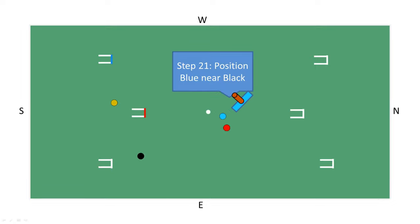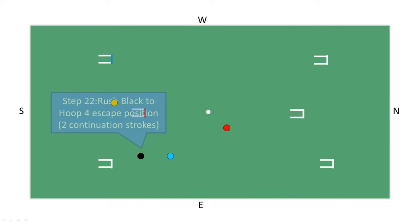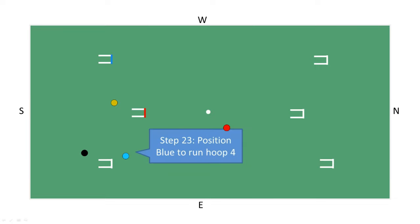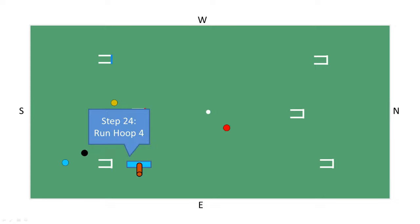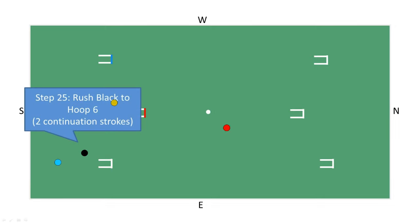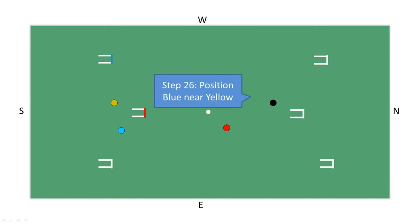Now blue positions near black and then rushes black to an escape position after hoop 4. With now two continuation strokes, blue again sets up to run hoop 4 and then runs hoop 4. Black is now rushed to hoop 6 for future use as a pioneer ball.